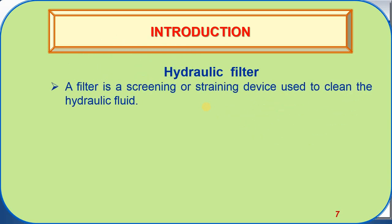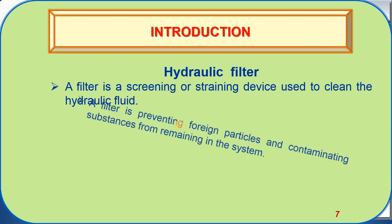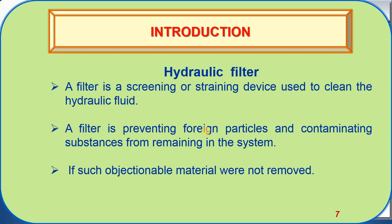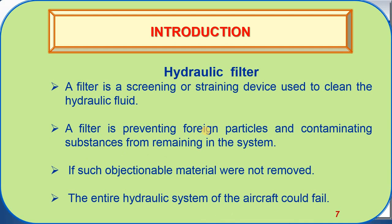Introduction: Hydraulic filter. A filter is a screening or straining device used to clean the hydraulic fluid. A filter prevents foreign particles and contaminating substances from remaining in the system. If such objectionable material were not removed, the entire hydraulic system of the aircraft could fail.